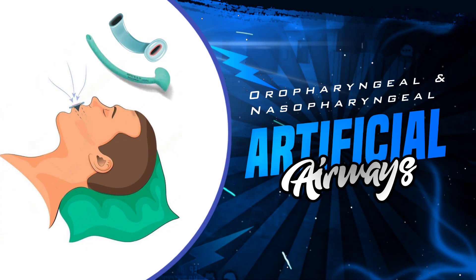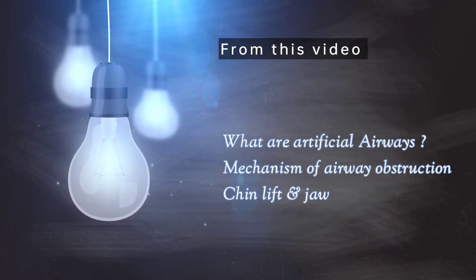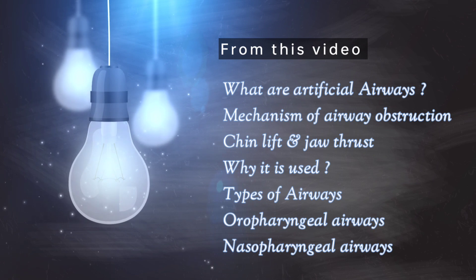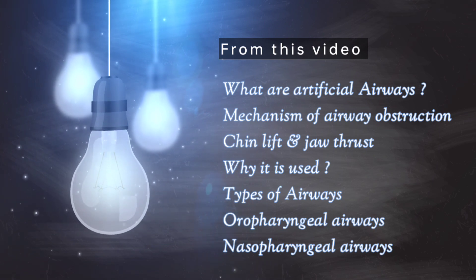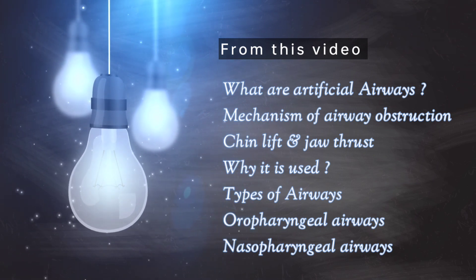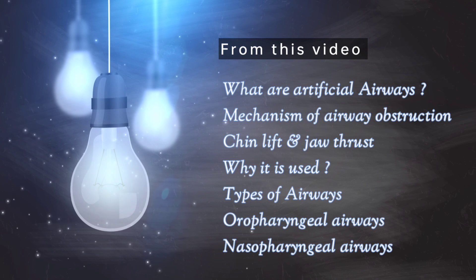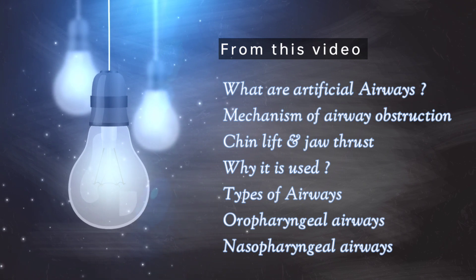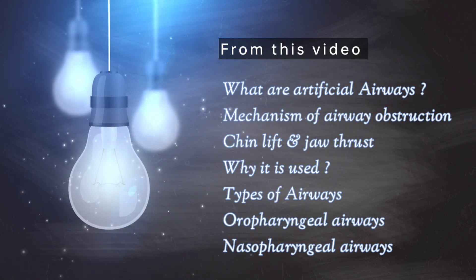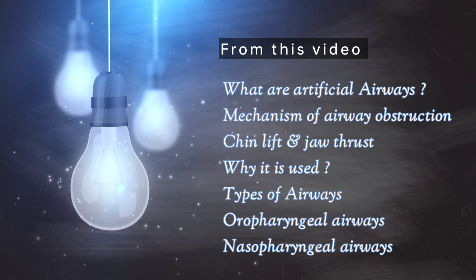Today we're going to see Artificial Airways. From this video, you'll know: what are Artificial Airways, mechanism of Airway Obstruction, Chin Lift and Jaw Thrust and why it is used, types of airways, Oropharyngeal Airways, and Nasopharyngeal Airways.